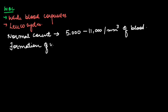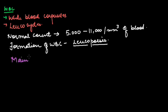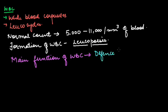Formation of WBC is called as leukopoiesis. The main function of WBC is that it helps in defence — they are mainly a defence mechanism. They are also regarded as soldiers of the body.